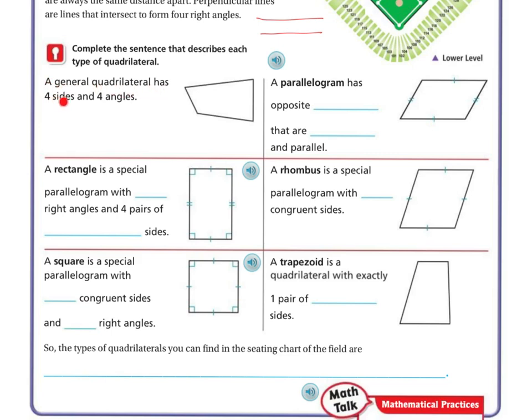So let's complete the sentence that describes each type of quadrilateral. A general quadrilateral has four sides and four angles. So one, two, three, four, and then there's four angles.